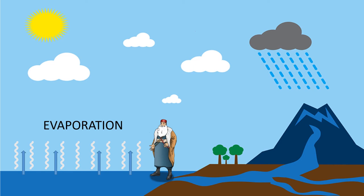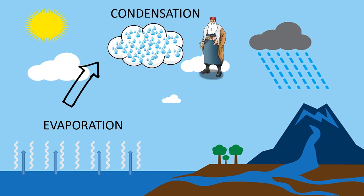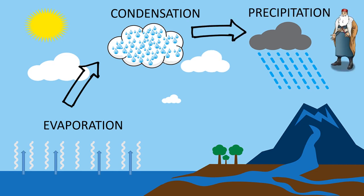Condensation comes next — in the sky, due to the cold, water vapor becomes water droplets and forms a cloud. Then precipitation: the water droplets are heavy and big, and this is when it starts raining.